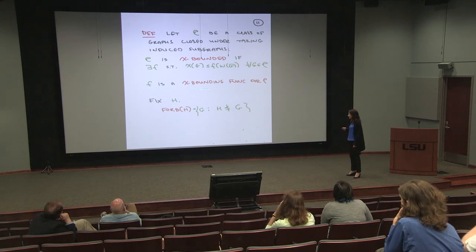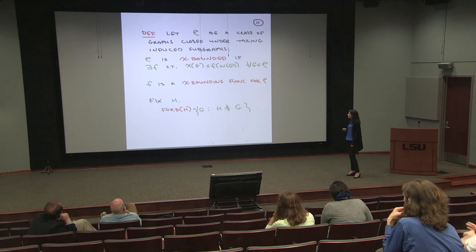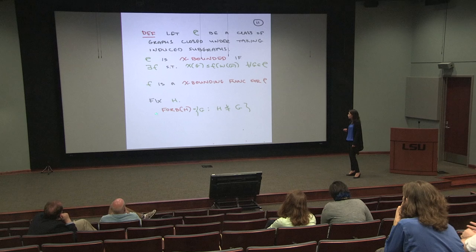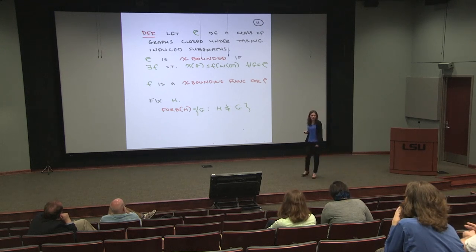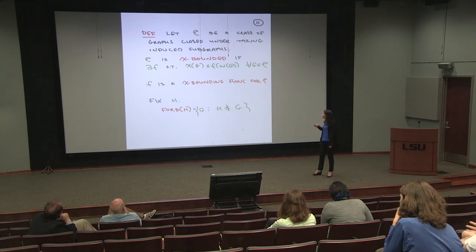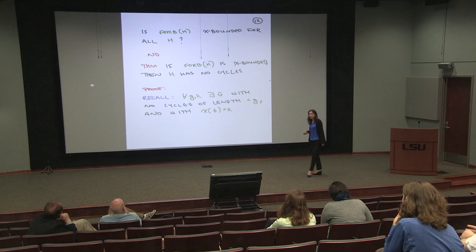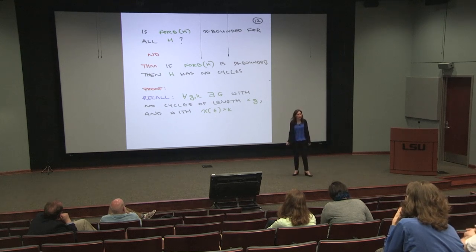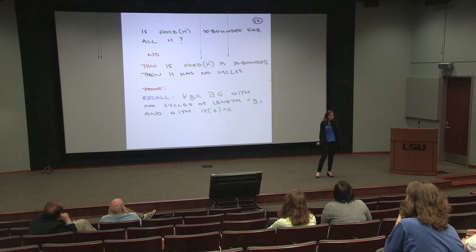If I start with a graph H, then the class Forb(H) is the class of all graphs that don't contain H as an induced subgraph. So: maybe the class of all graphs is not chi-bounded, but maybe Forb(H) is always chi-bounded for every H — with a chi-bounding function that depends on H. The answer is no.